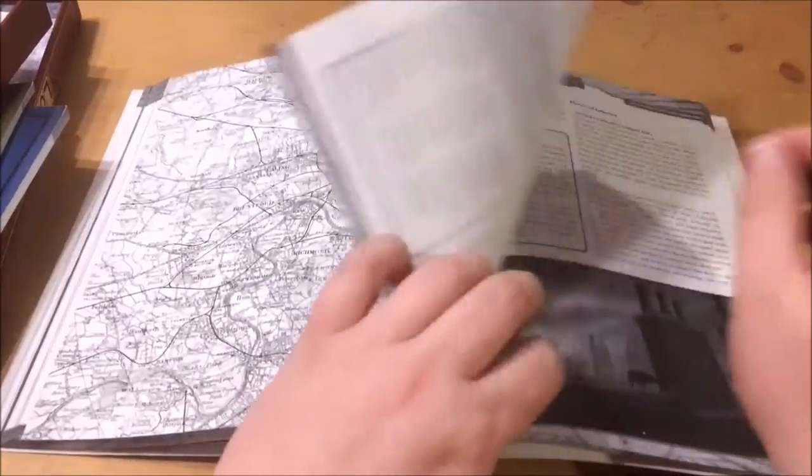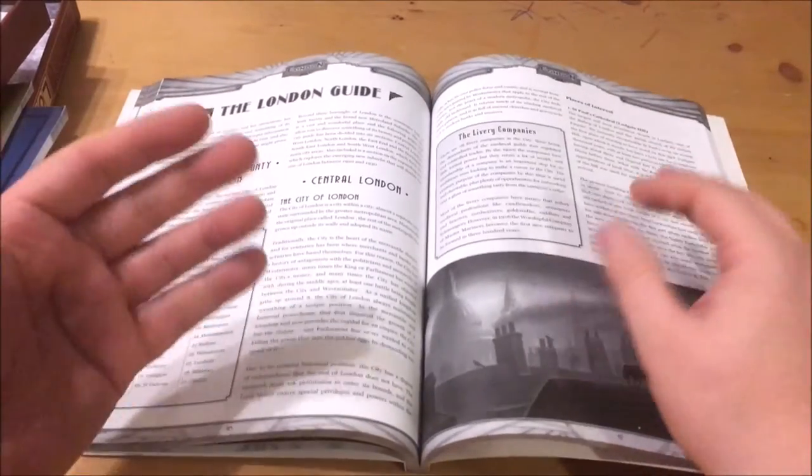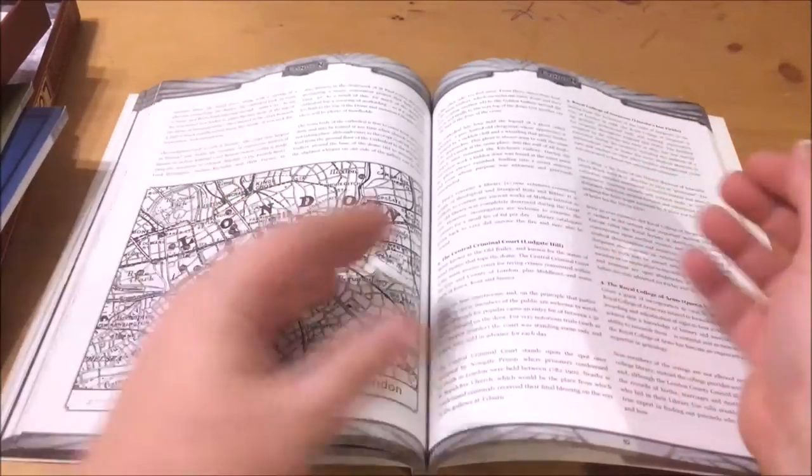The final and larger chapter is the London Guide. This covers the physical zones of London and gives details on the various boroughs and the things and places of interest in them.